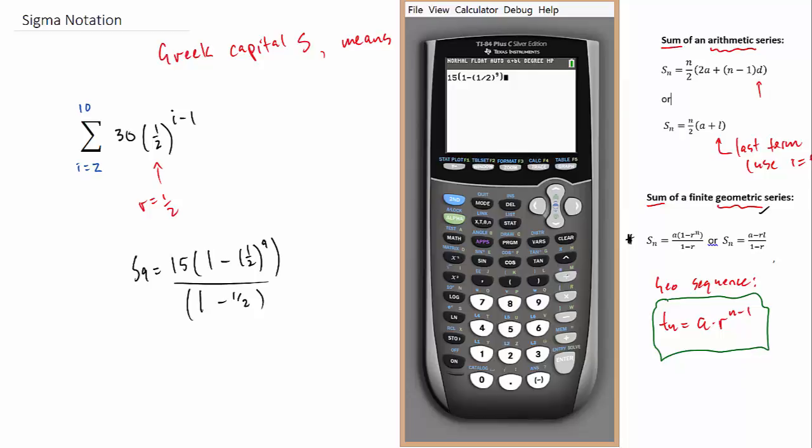And what this will give me is sort of an approximate answer, because it's going to round and give me a decimal of around 29.9.